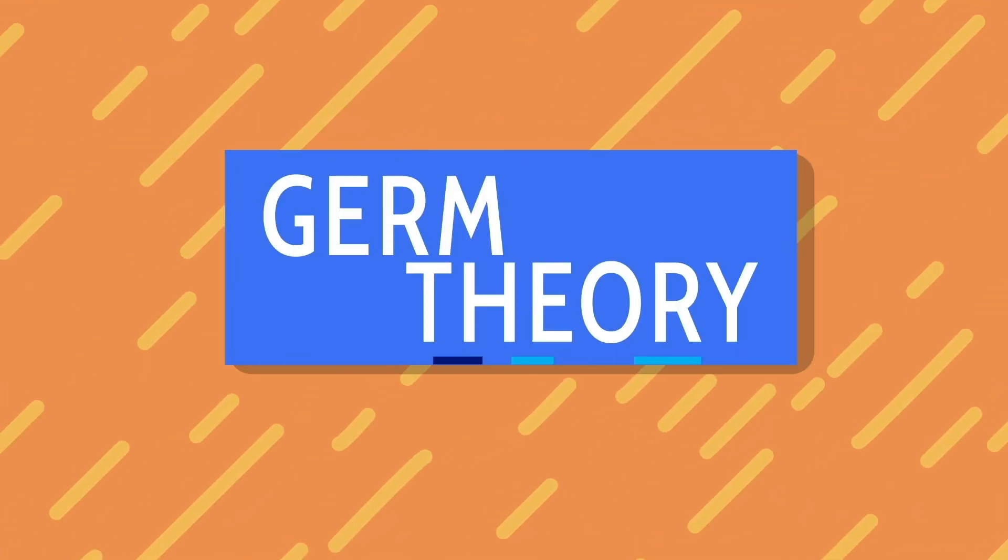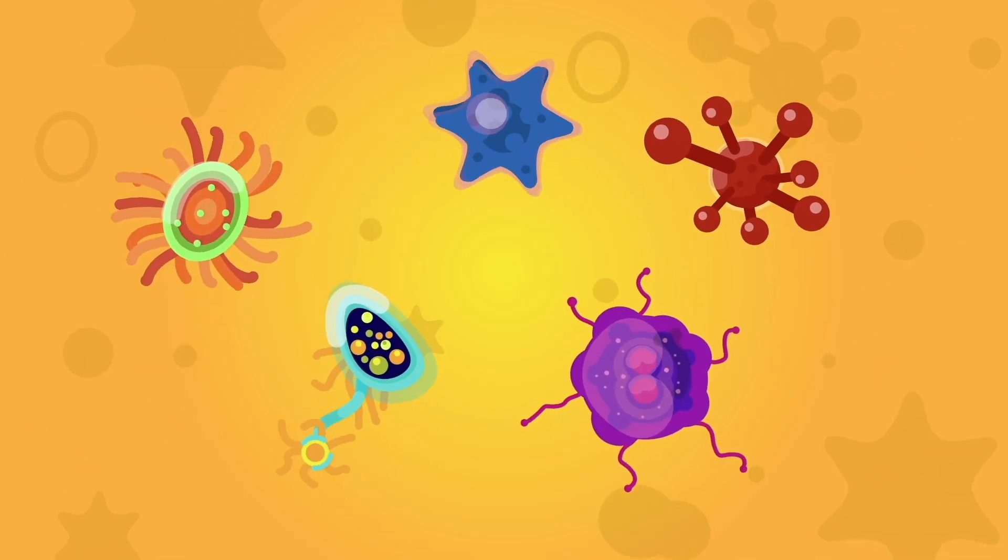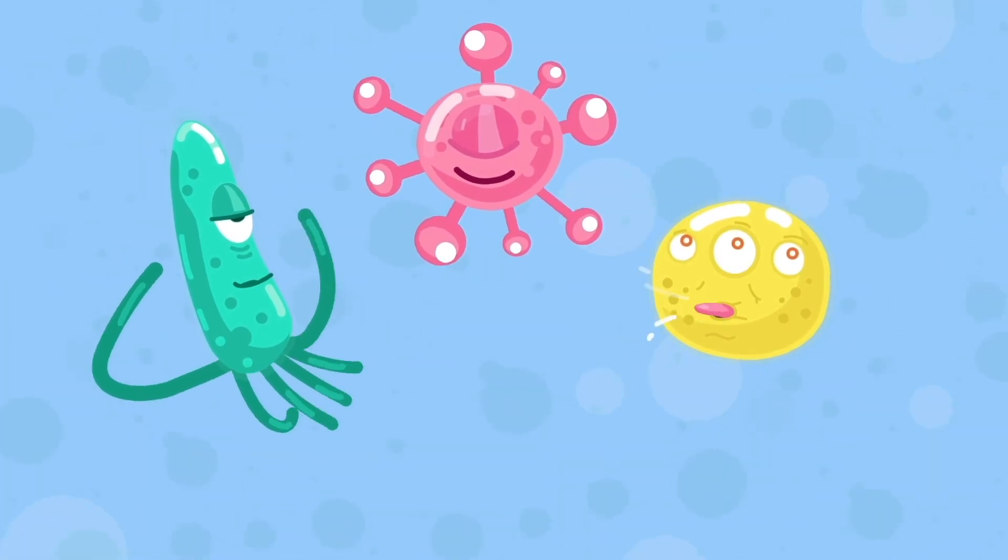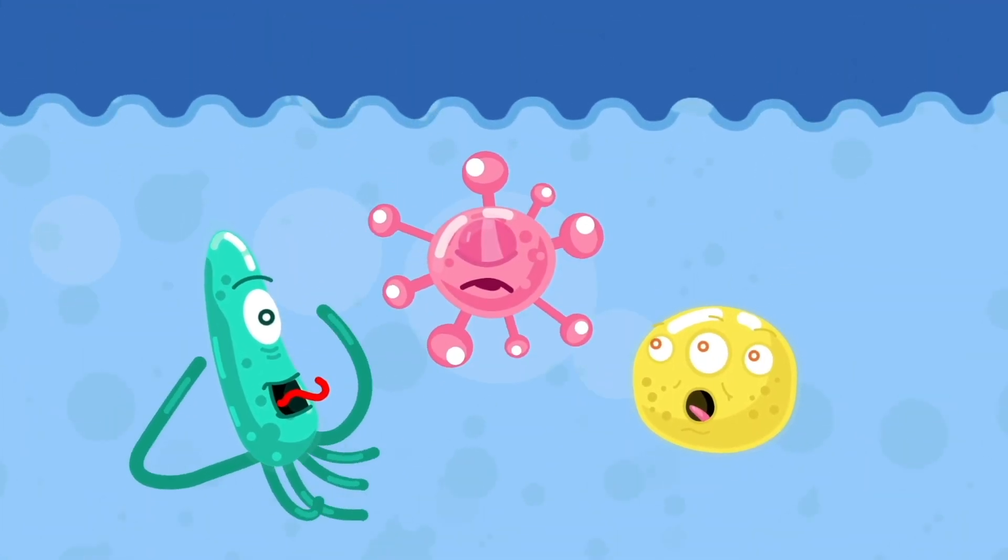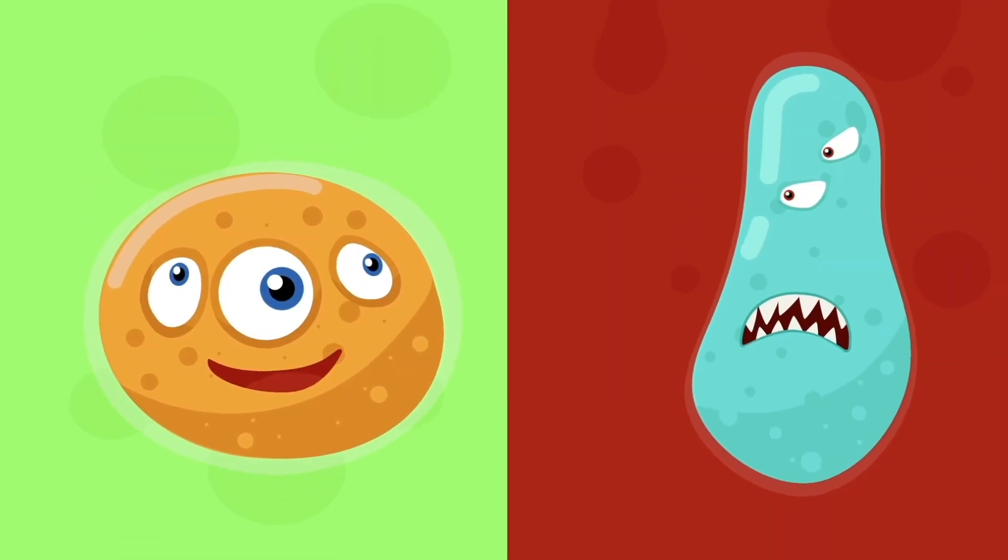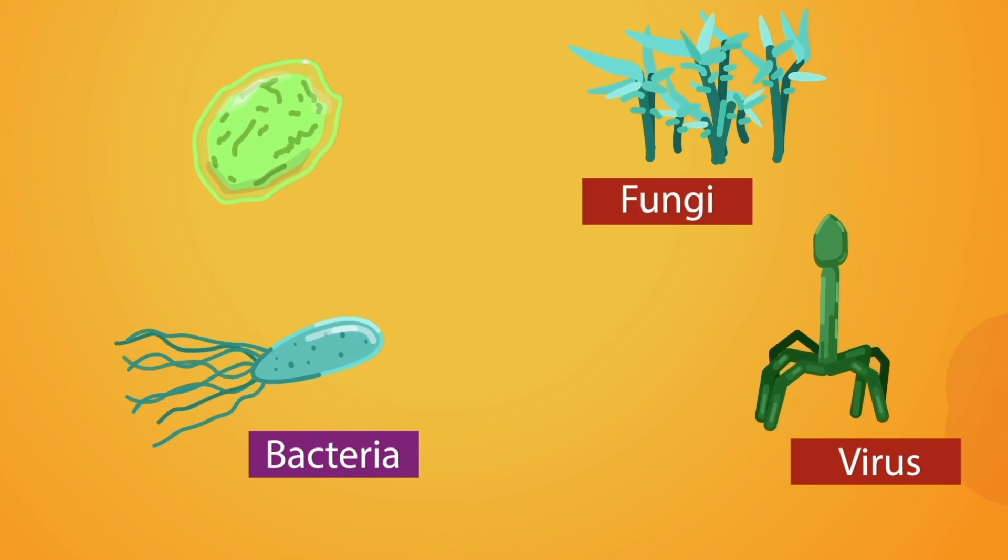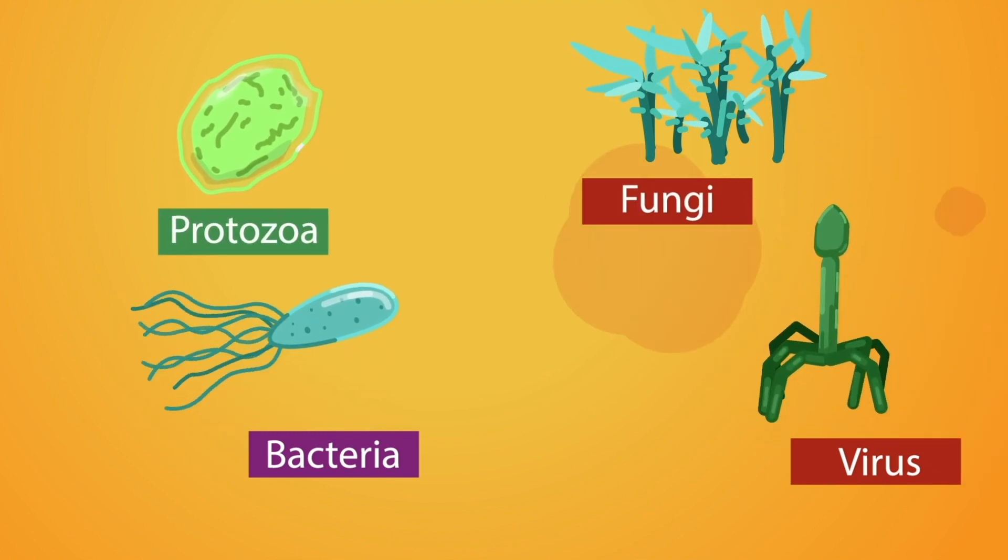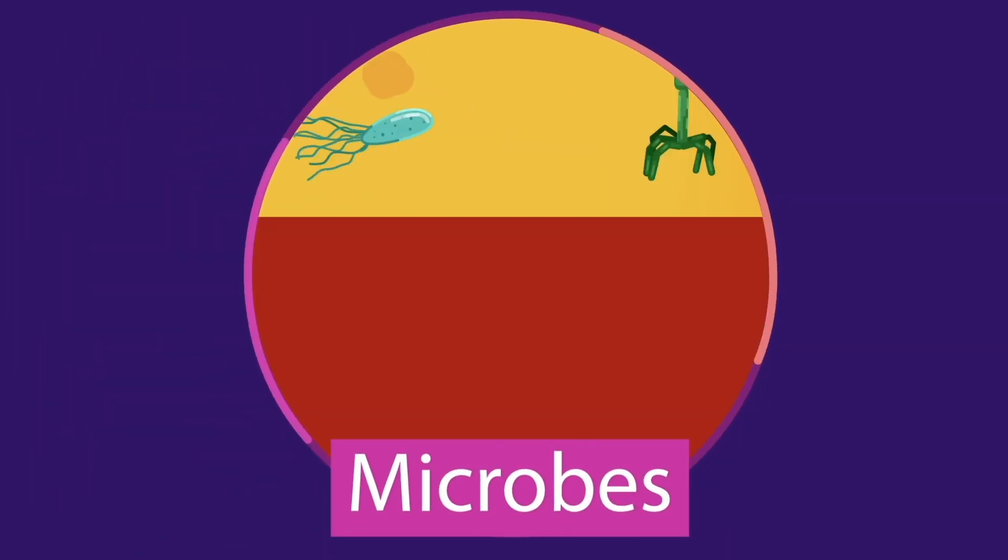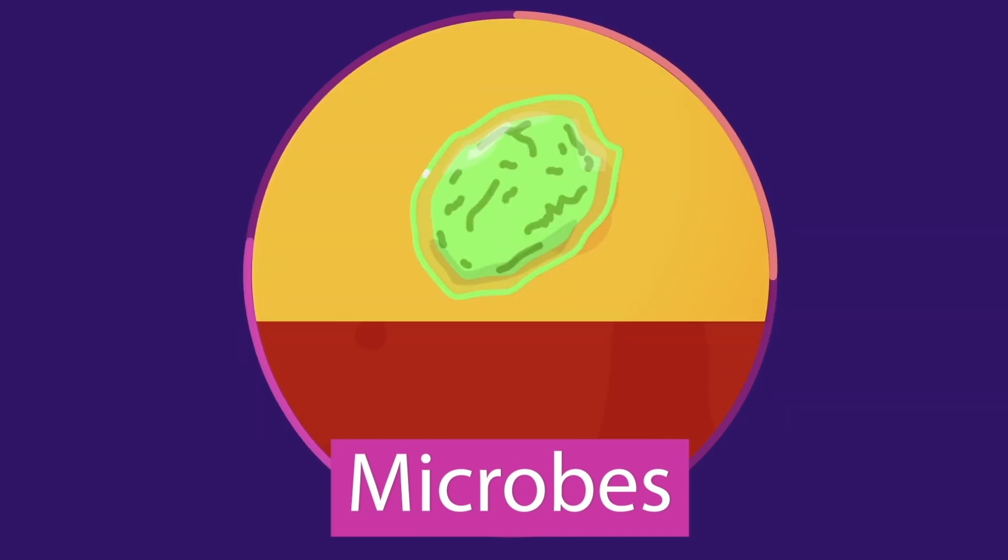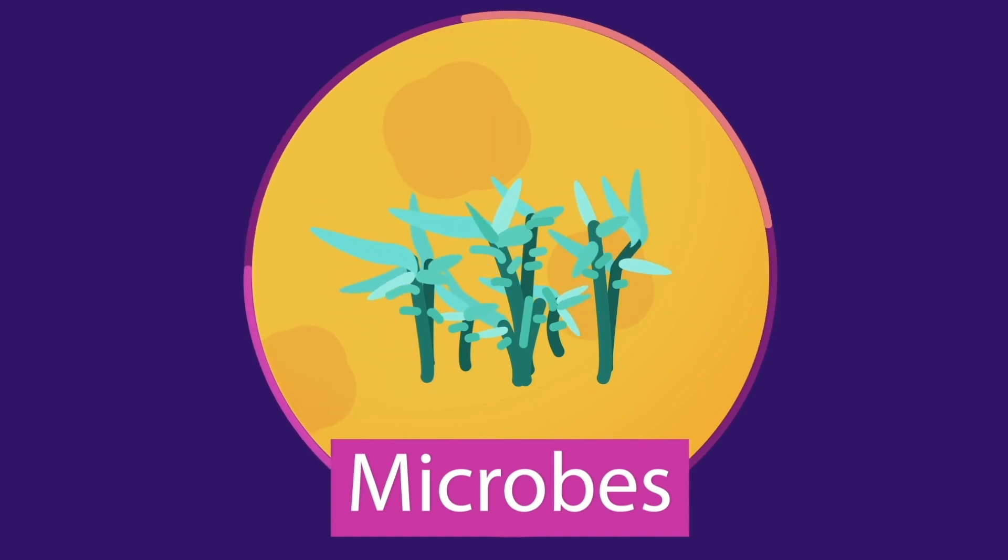In the late 1800s, germ theory established the connection between microscopic organisms like bacteria and disease. For a long time, hygiene was thought of as getting rid of bacteria or almost akin to sterilizing the skin. But not all bacteria are germs. Microscopic bacteria, viruses, fungi, and other single-celled organisms called protozoa are collectively called microbes. Germs refer to those microbes that can cause illness or disease. But many microbes are permanent residents on our skin and cause us no harm at all.